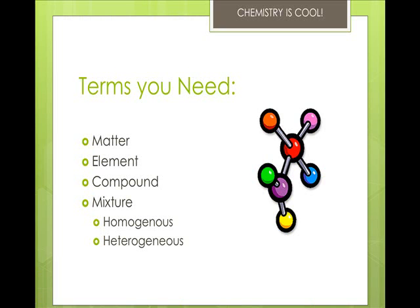As a reminder, matter occupies space and has mass. An element is the simplest form of matter and cannot be further simplified. Make sure that you refer to your periodic table, which you should have on hand at any time while doing chemistry. A compound is two or more elements chemically combined, and I'll talk more about that in later lectures.